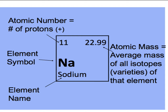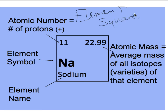Zooming in and taking a look at each particular element, we have what I'm going to call 'element squares.' Whenever you hear me talk about an element square, I'm talking about the information within each box on the periodic table. There is some very specific information about the element in each element square, and you need to be filling in all of these things as we go.